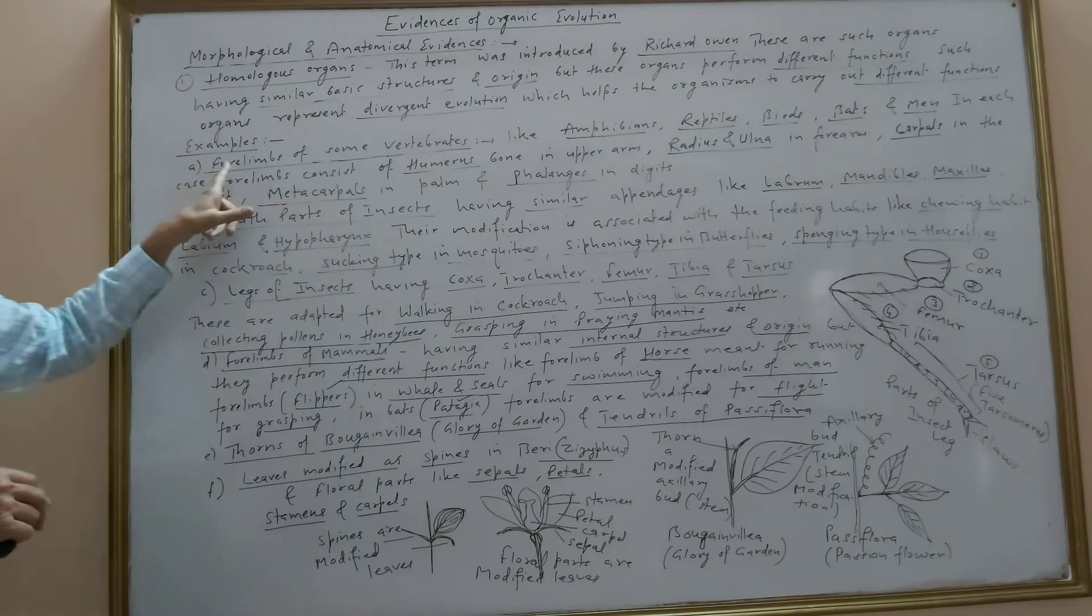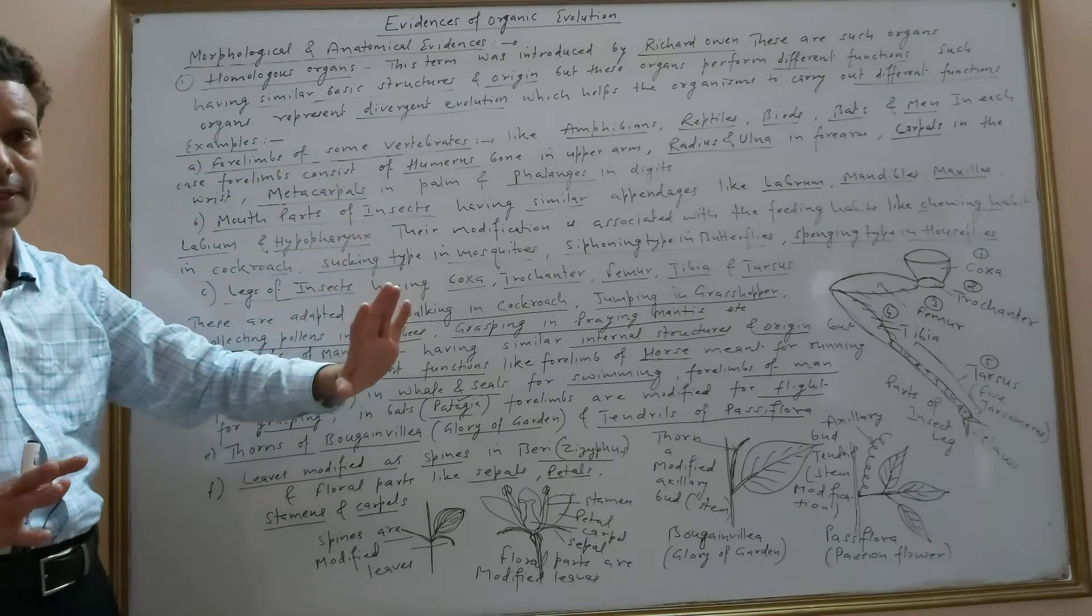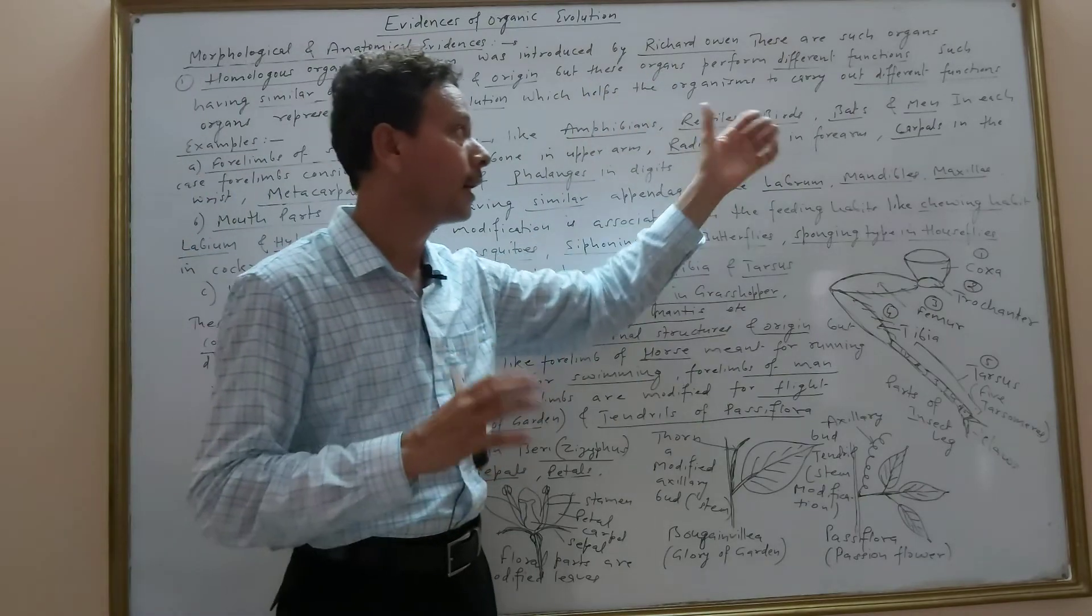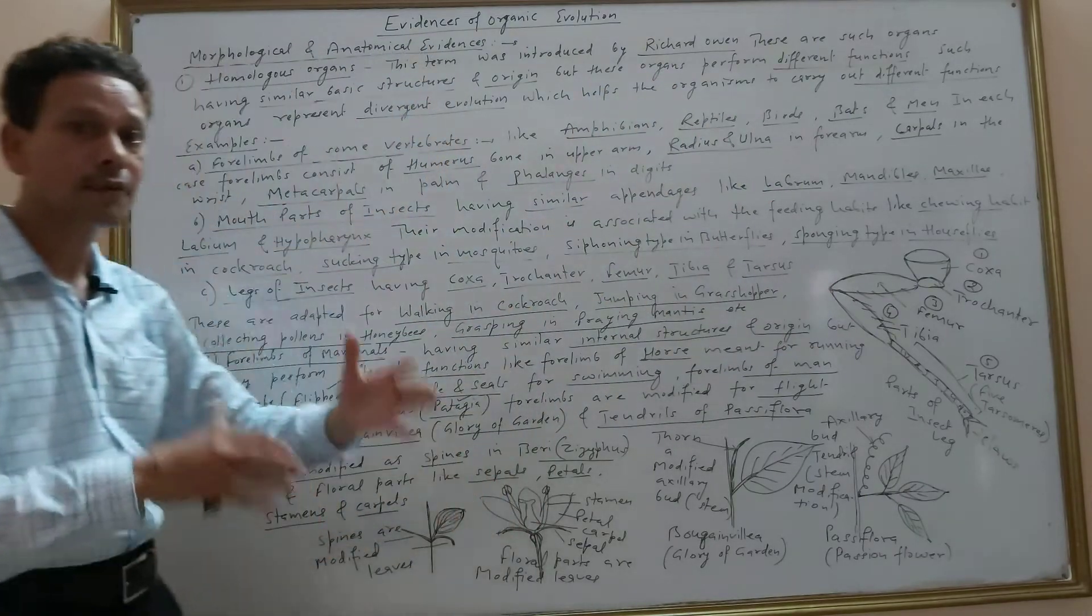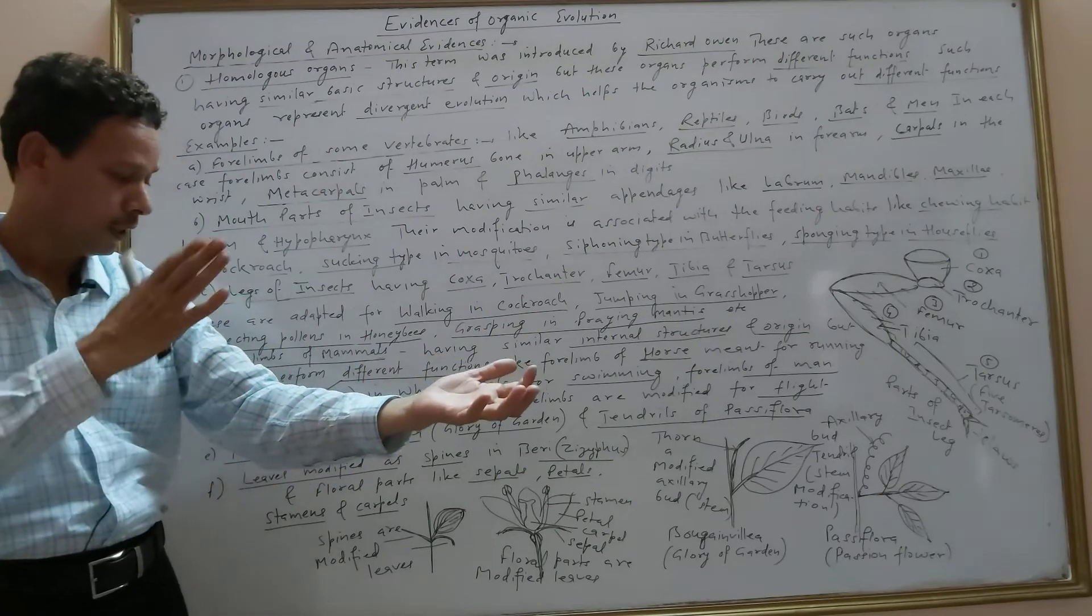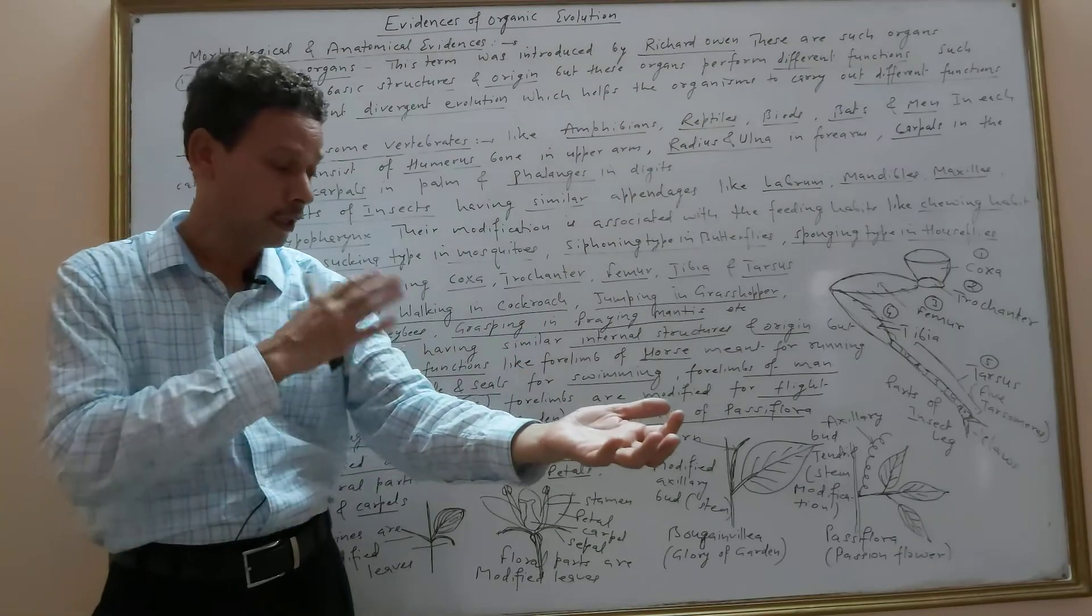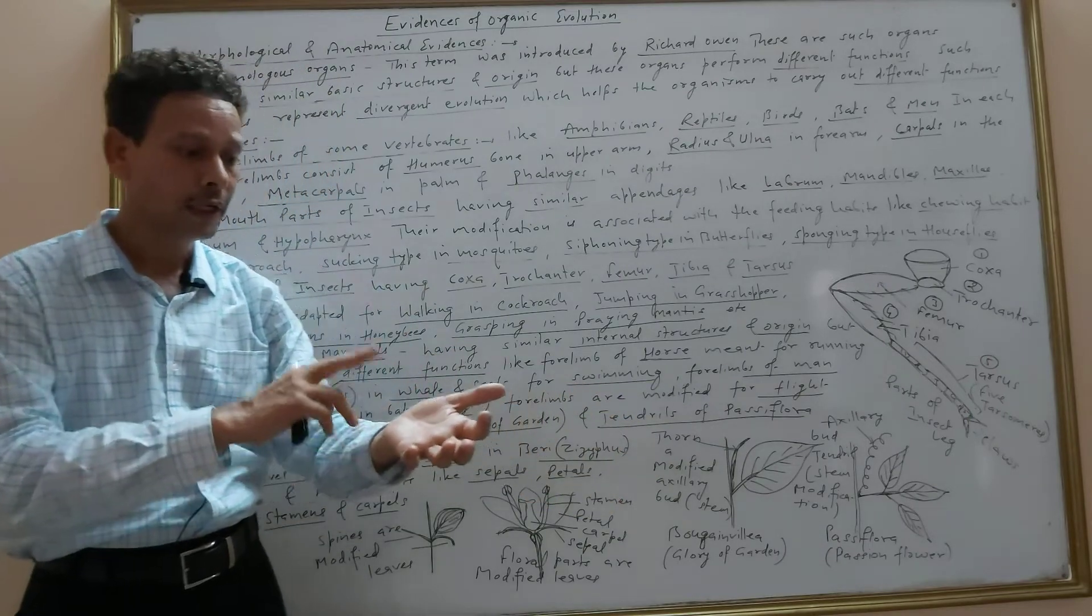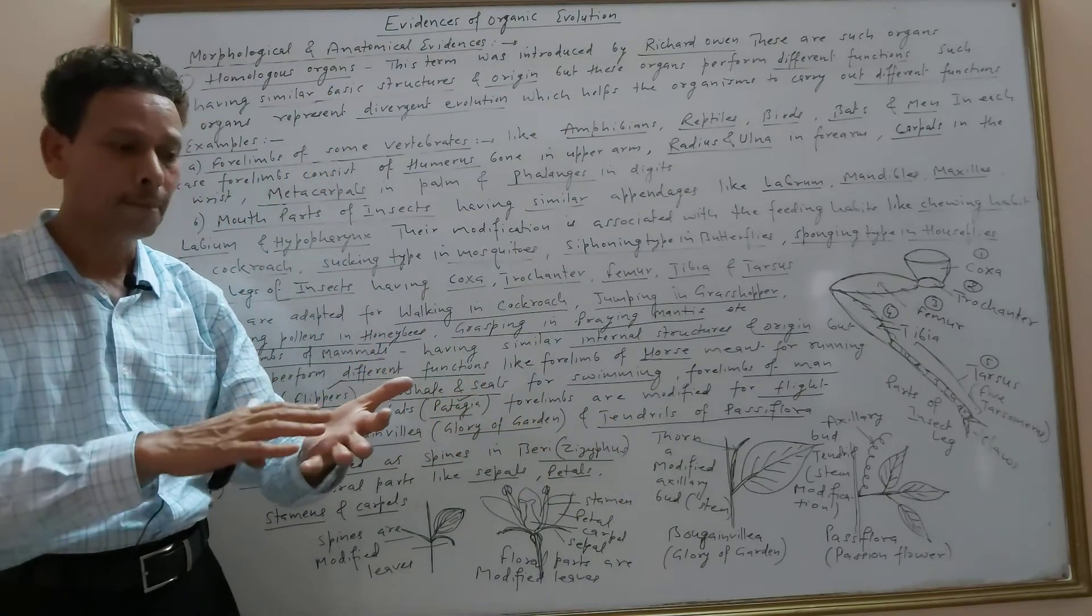Some examples of homologous organs: forelimbs of vertebrates like amphibians, reptiles, birds, bats, and men. In each case, the forelimb is made up of humerus bone in upper part, in the forearm two bones radius and ulna, in wrist carpus, in palm metacarpus, and in digits phalanges are present.